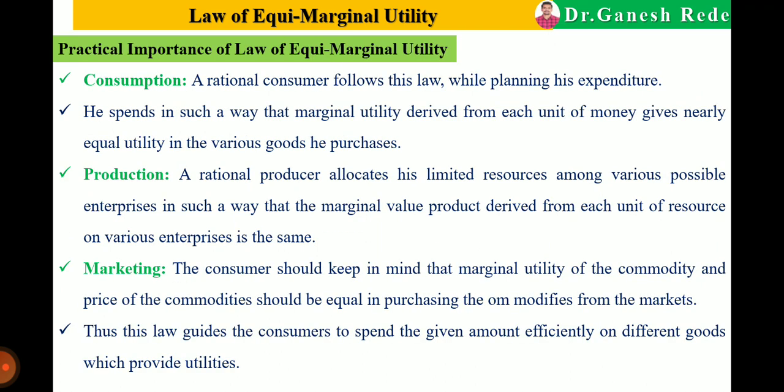Now regarding the practical importance of this law: it is very useful in day-to-day life. In the case of consumption, every rational consumer follows this law while planning household expenditure. Every family person tries to get maximum utility from his limited amount of money, spending in such a way that marginal utility derived from each unit of money gives nearly equal utility across various goods purchased.